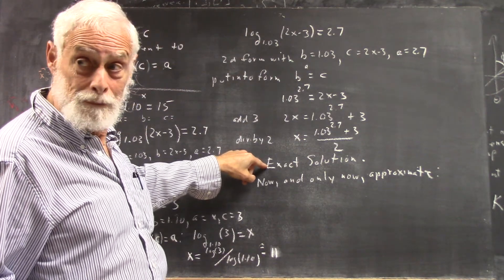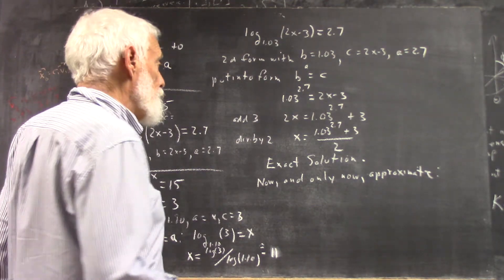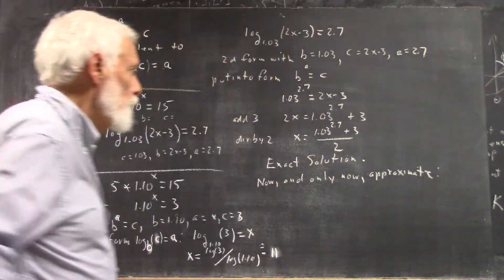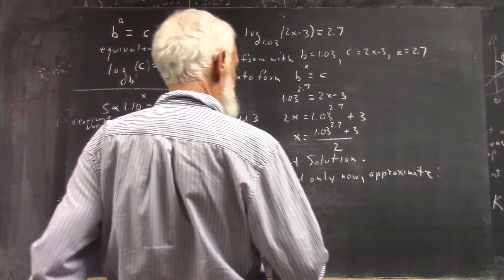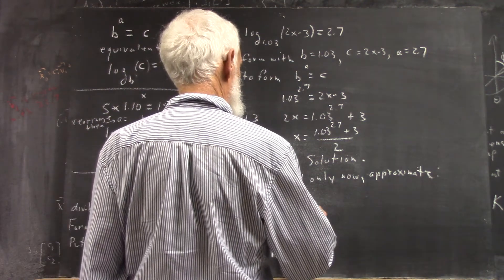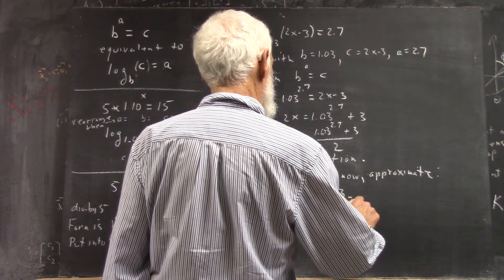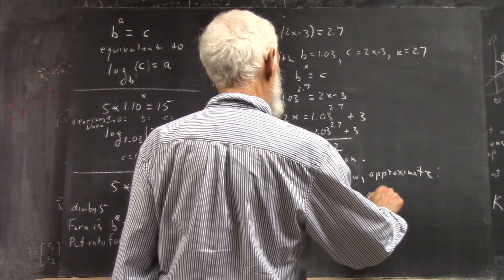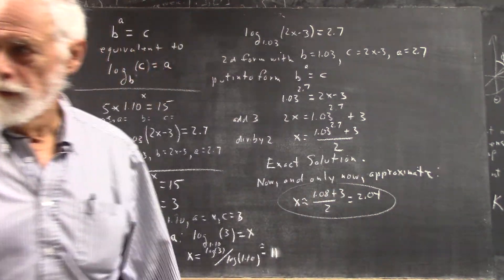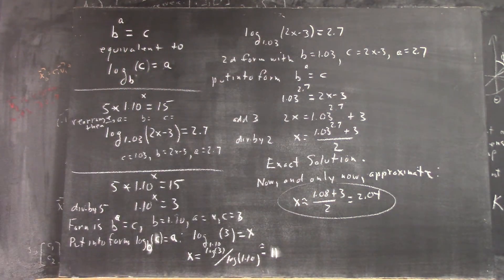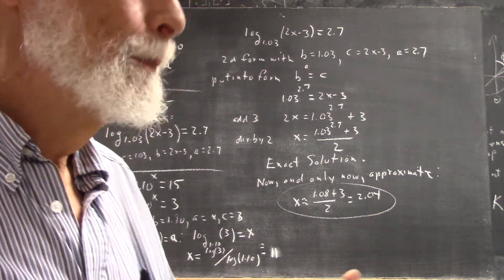Always the exact solution before you approximate or simplify. Now 1.03 to the 2 is pretty close to 1.06, to the 3 is pretty close to 1.09, so I'm going to say this is about 1.08, divided by 2 is 2.08, which is 2.04. Now you can use your calculator to get more significant figures and get a more accurate result.